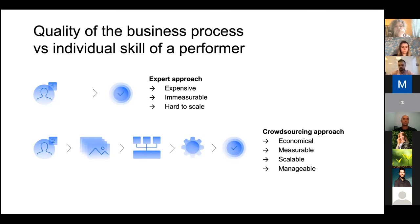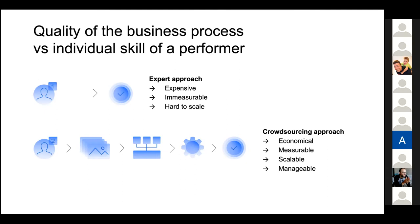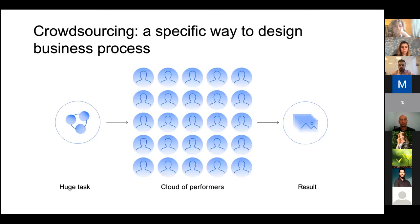Instead of that, we use what we call a crowdsourcing approach, where we build business processes that do not depend on the skill of individual performers. Rather, the result depends on the quality of the design of the process in general. We decompose the huge and difficult task into a set of small and very simple tasks, apply quality control techniques on every step, and apply authorization techniques at every step. This gives us a pipeline which is more effective, easier to scale, easier to manage and measure.